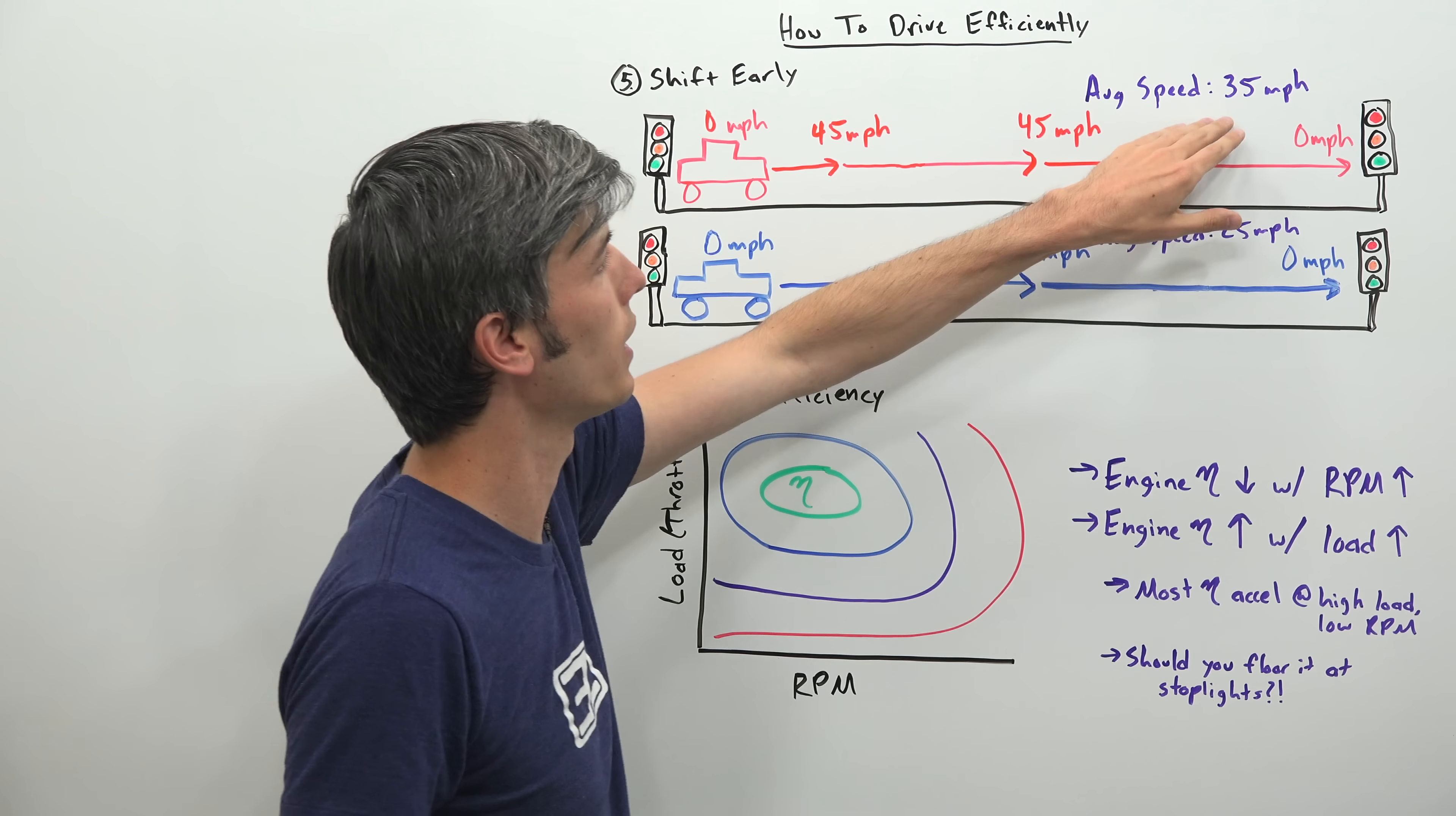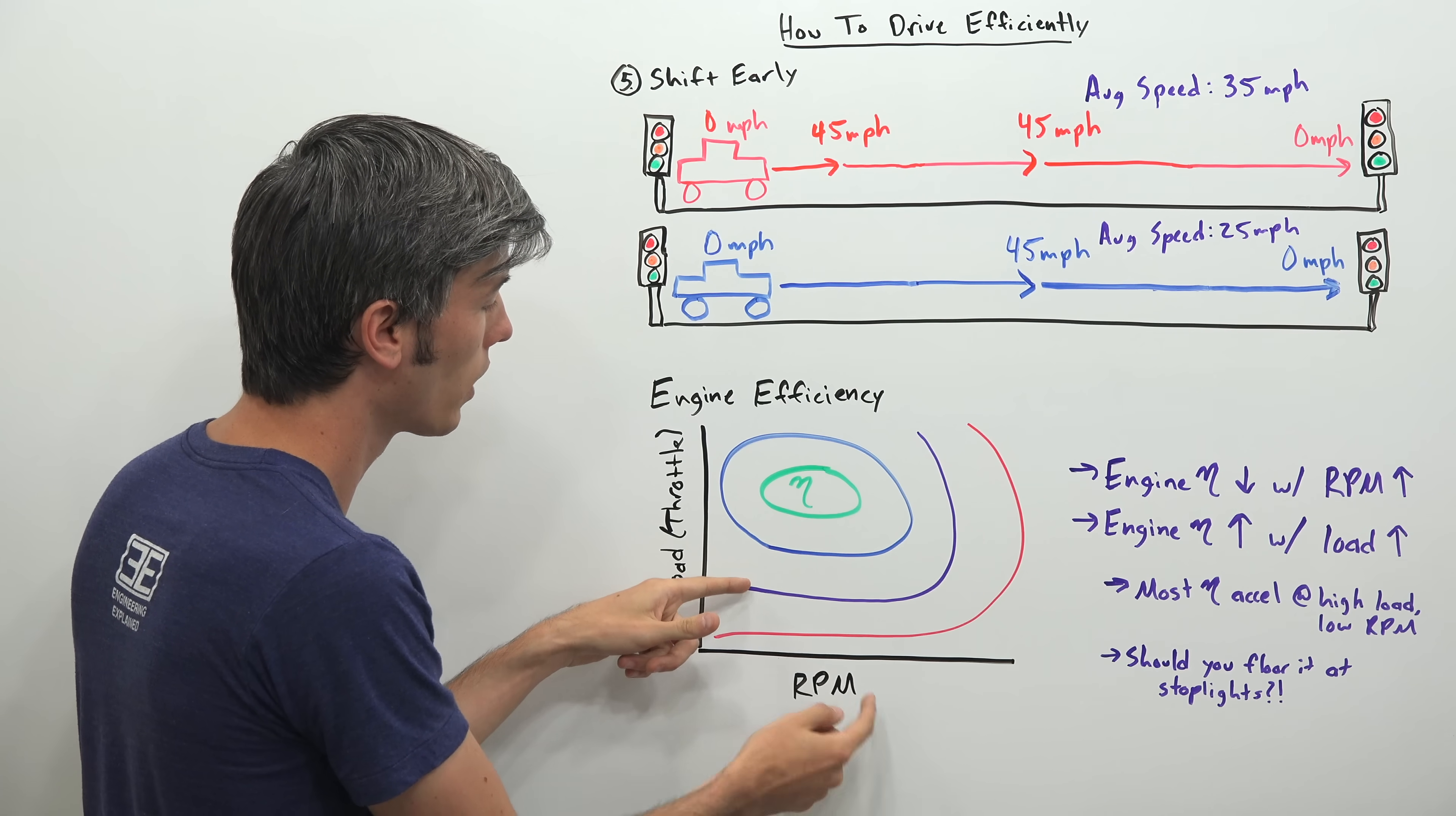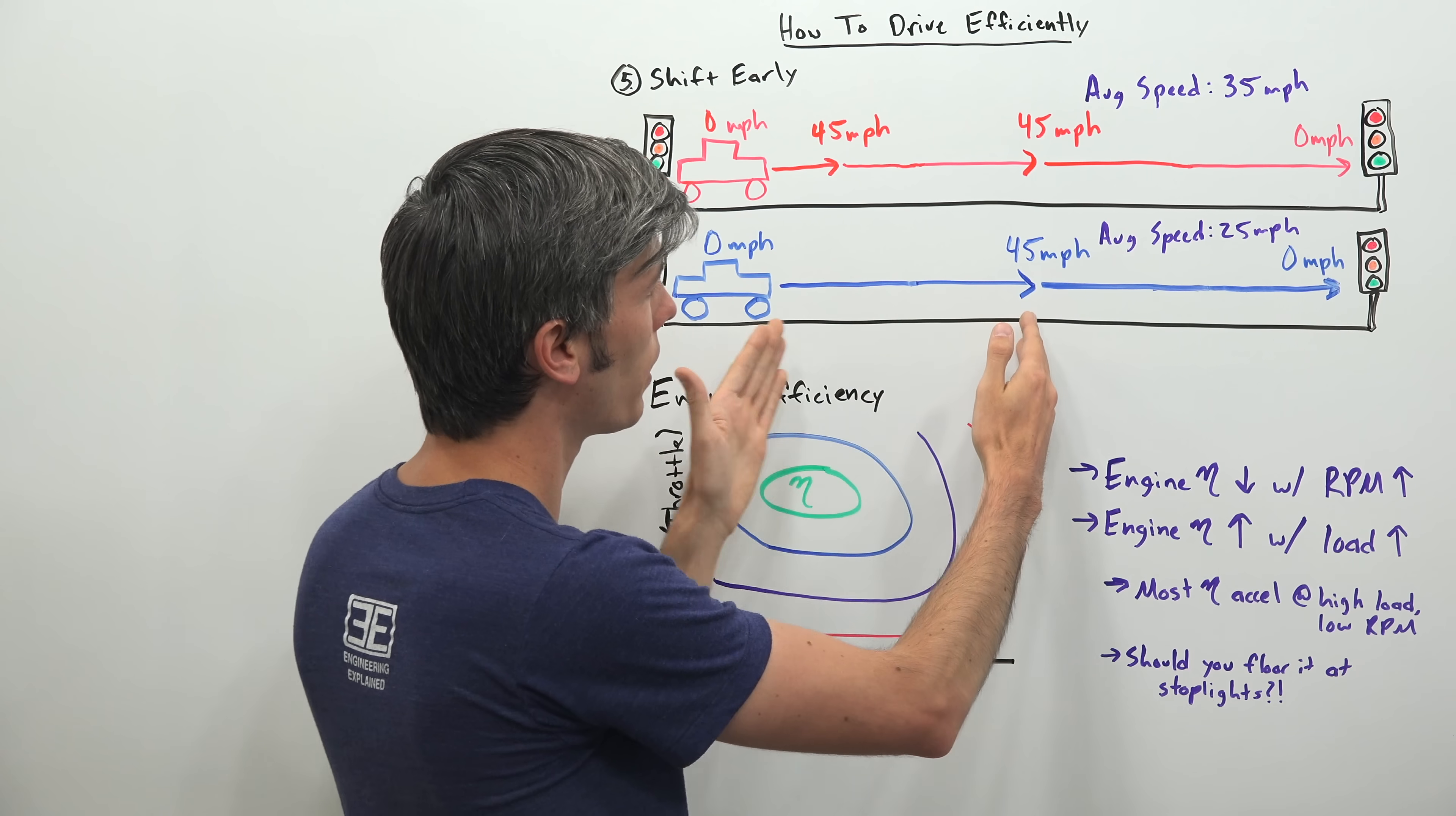And let's say in this scenario our average speed is 35 miles per hour. In our other scenario we're operating at a lower efficiency region. We're operating at a low load. But a low RPM. So somewhat efficient. But not as efficient as the acceleration in this first scenario. But we're doing so more slowly.